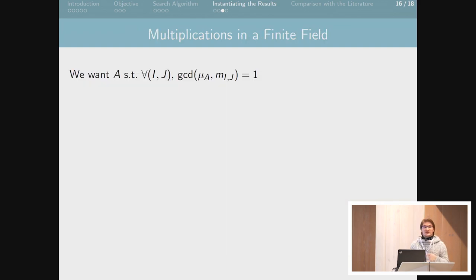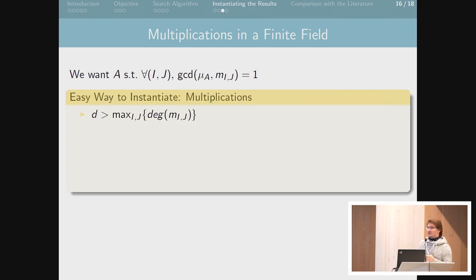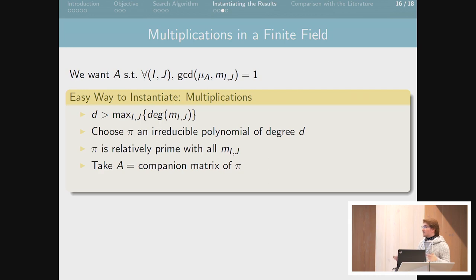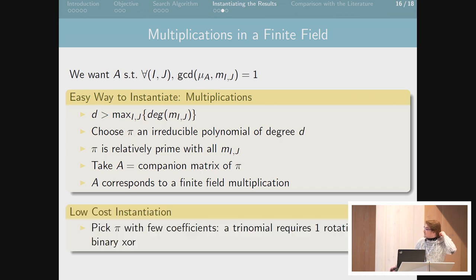We can do this by going back to the finite field. We want to find a linear mapping A such that its minimal polynomial is coprime with all the formal minors. If we take D greater than the degrees of all the formal minors and choose pi as an irreducible polynomial of degree D, then by construction pi is relatively prime with all the formal minors. So if we take A as the companion matrix of pi, this gives an MDS instantiation, and this A just corresponds to a finite field multiplication. This can be implemented at low cost: if we pick pi to be a trinomial, it can be implemented with just one rotation and one bitwise XOR.